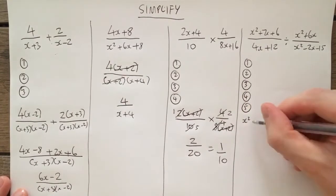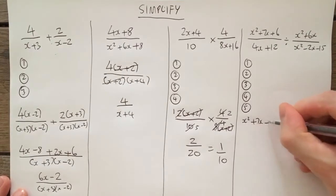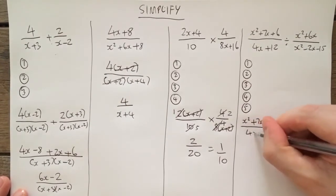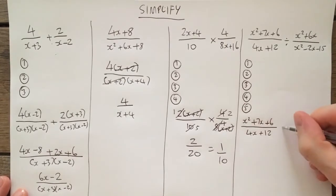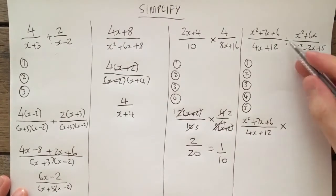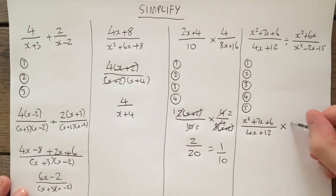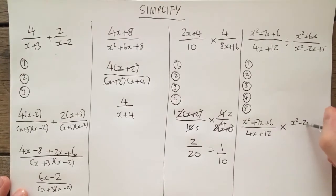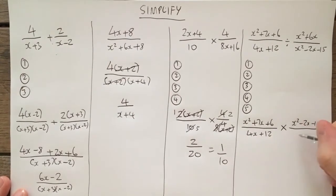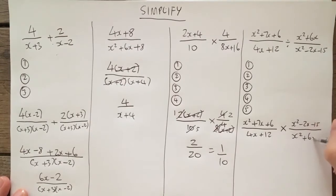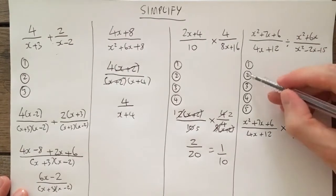So I'm going to rewrite. Hopefully, I've got enough room at the bottom here. I'm going to rewrite this question. I'm going to keep this fraction the same. I'm going to change the divide to a multiply. I'm going to flip this fraction right here. X squared plus 6x. Good. I've done my first step.